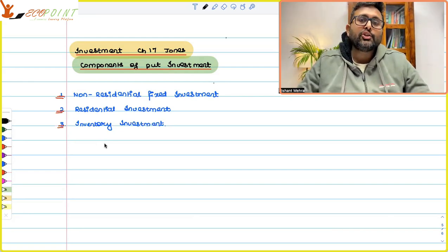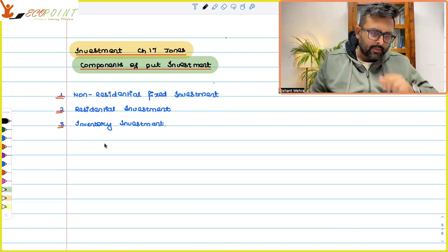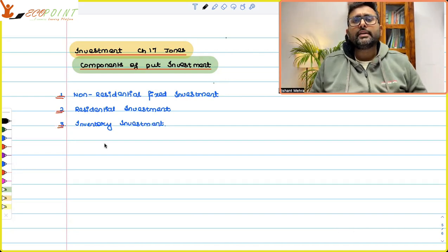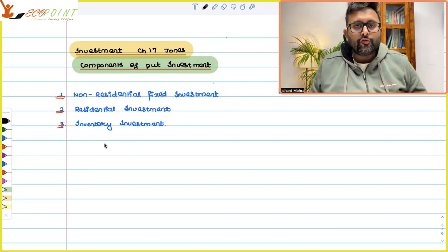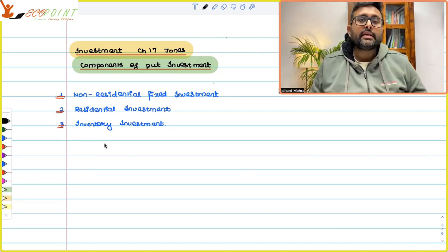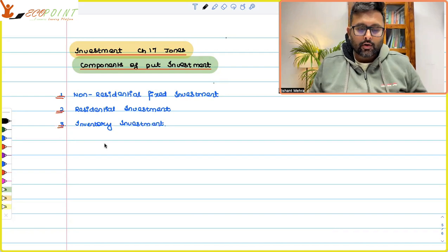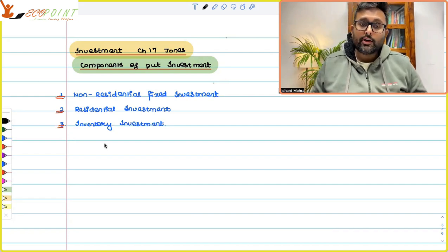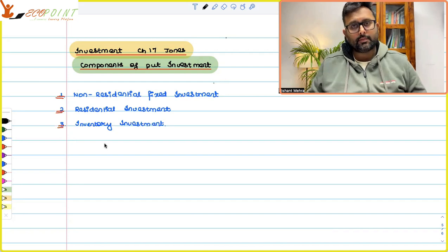One: non-residential fixed investment. What is non-residential fixed investment? It could be firms investing in equipment, firms investing in structures, or firms investing in intellectual property. All of that is an example of non-residential fixed investment.